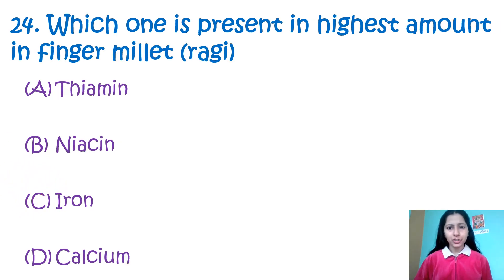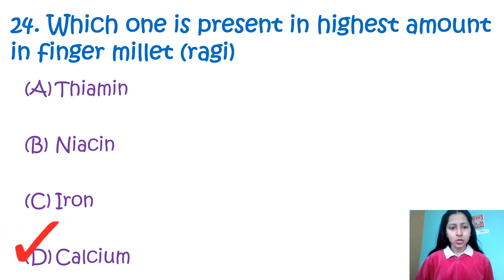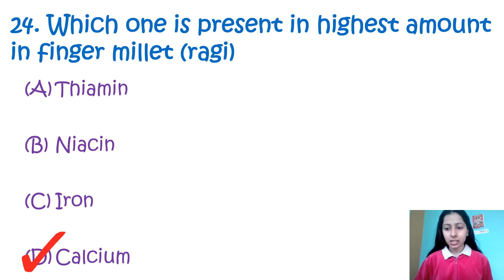Question number 24: Which nutrient is present in highest amount in finger millet (ragi)? Option A: thiamine, Option B: niacin, Option C: iron, Option D: calcium. Finger millets contain the highest amount of calcium. My correct option is option number D — calcium. Finger millets also contain protein (5–8%), carbohydrates, around 75% dietary fiber, and minerals — making it a nutritious cereal.